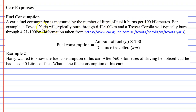For example, I went on the internet on carsguide.com.au and there was a little article that said a Toyota Yaris will typically burn 6.4 litres per 100 kilometres, and the Toyota Corolla was burning 4.2 litres per 100 kilometres. So by this article, I could see that the Corolla was cheaper to run for some reason.